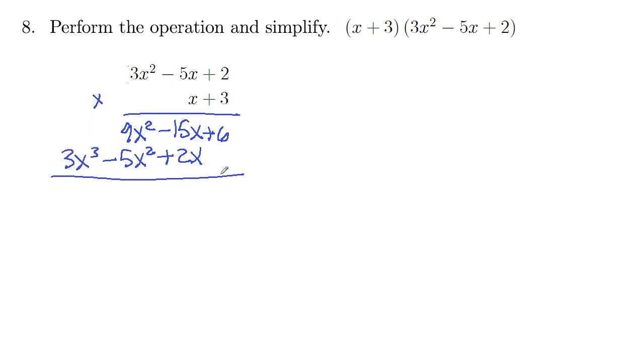And then we do a vertical addition. So add our like terms. So 6 and 0, 6. Negative 15, positive 2, negative 13x. 9x squared minus 5x squared, 4x squared. Positive. And then 3x cubed is all that's left up front. 3x cubed, excuse me. So there is our product.